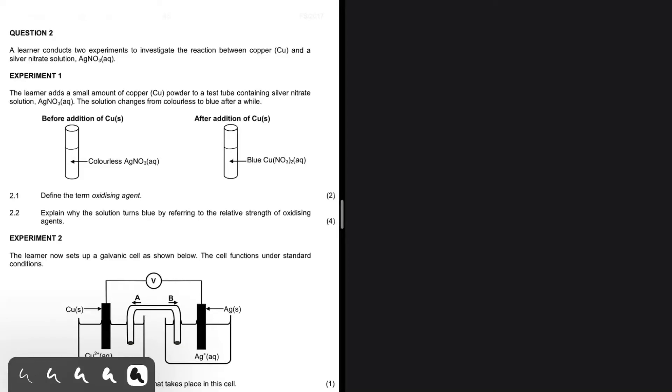A learner conducts two experiments to determine the reaction between copper and silver nitrate. In experiment one, the learner adds a small amount of copper to a test tube containing silver nitrate. The solution changes from colorless to blue after a while.